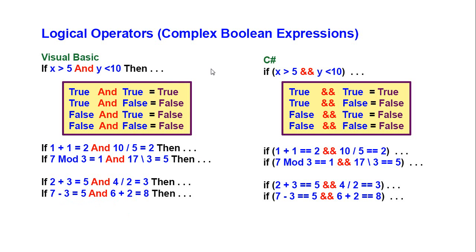It's the same thing in C#. The difference is, rather than the word AND, we use two ampersands. Otherwise, everything else is exactly the same. For our boolean expressions, if we're checking equality, we use the double equals operator.